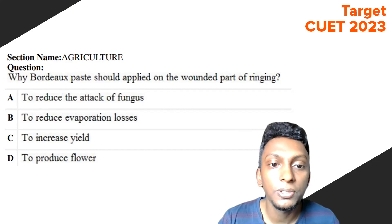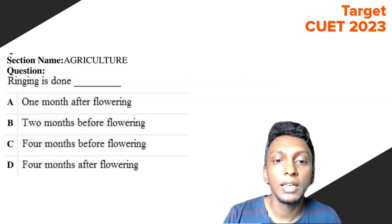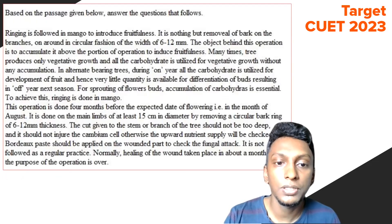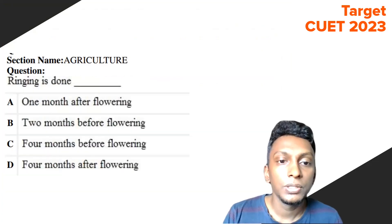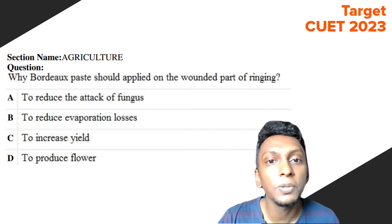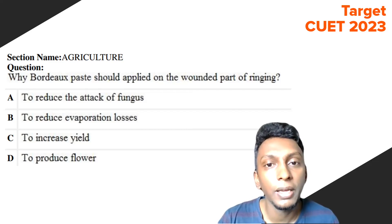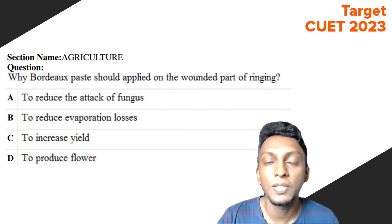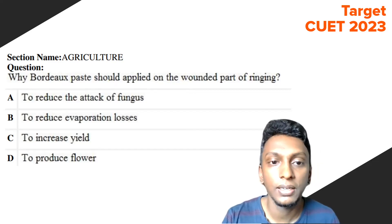Question 10: Why is Bordeaux paste applied on the wounded part after ringing? The options are: to reduce the attack of fungus, to reduce evaporation losses, to increase yield, and to produce flowers. The passage states Bordeaux paste should be applied to check the fungal attack. So the answer is Option A — to reduce the attack of fungus.